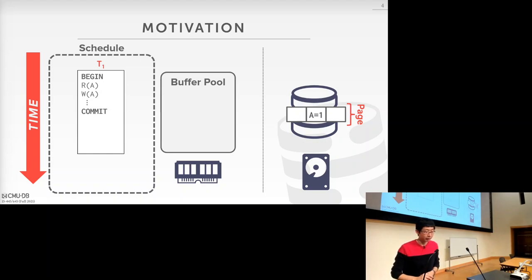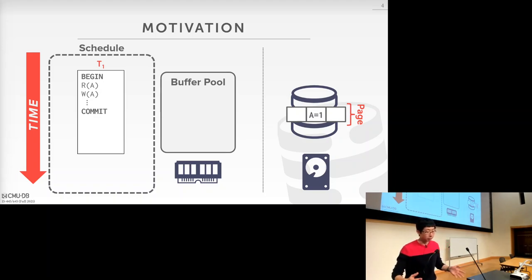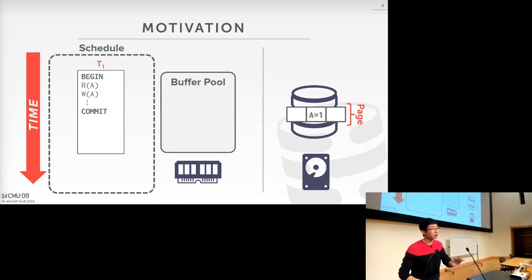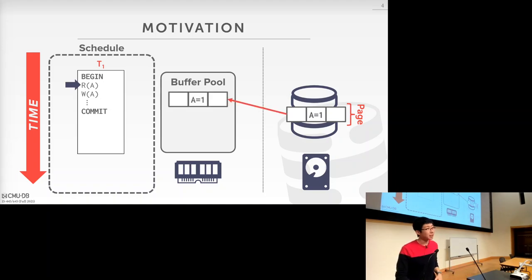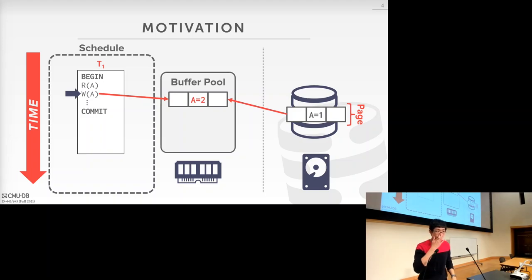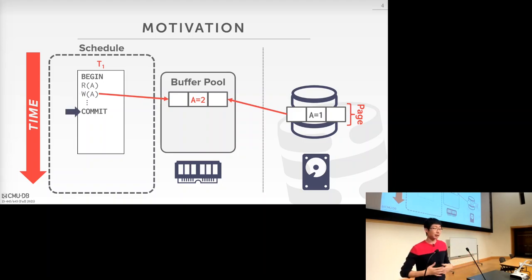To give you a motivating example about the importance of logging and recovery: say I have a transaction that reads A, writes A, and performs a commit. I'm also showing you what will be the content in the buffer pool and what will be the content on disk. Let's say we start this transaction, read A, and assume there's no content in the buffer pool at the beginning. The database system first needs to read and bring this page into the buffer pool, then perform the read. Then it needs to write A — assuming it changes the value of A from 1 to 2. Now, assuming the database system wants to commit — without any protection mechanism or logging and recovery — based on what we talked about earlier, when the system commits, we just get back to the client and say we already committed.